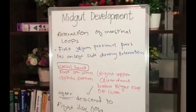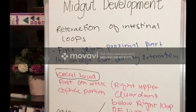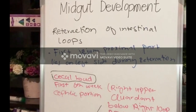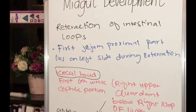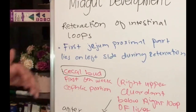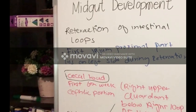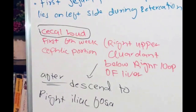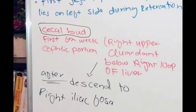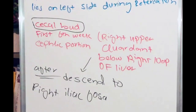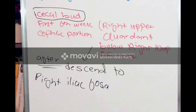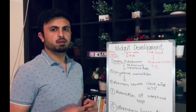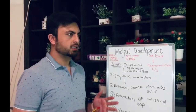Our next step is the retraction of intestinal loops. Retraction starts when organs from the extra-embryonic cavity start to come back and settle in the abdominal cavity. The first part that comes back is the proximal part of the jejunum, which lies on the left side. Regarding the cecal bud — essentially the cecal bud is from the cephalic portion of the intestinal loop. During the first six weeks, its position is in the upper right quadrant, just below the right lobe of the liver. After retraction, it descends to the right iliac fossa.